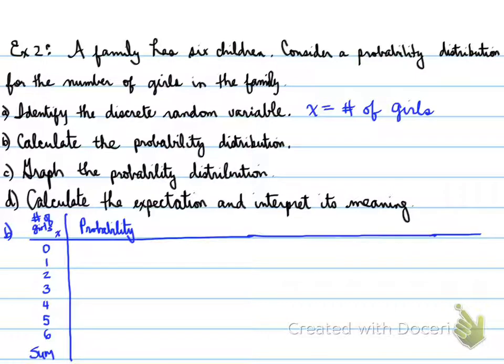The probability of getting those girls: 6 choose 0, so six children choose zero girls, 0.5 to the power of zero (girls) and 0.5 to the power of six (boys). The next one is 6 choose 1, one girl, 0.5 to the power of one times 0.5 to the power of five. We do the same for two, three, four, five, and six.